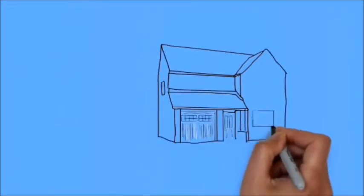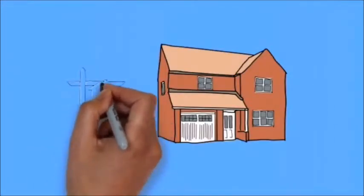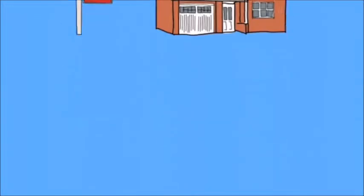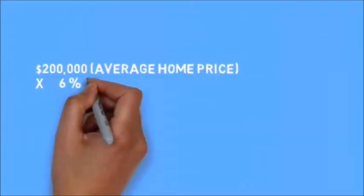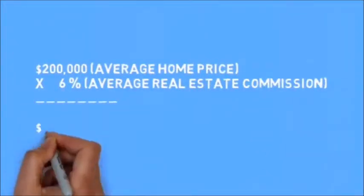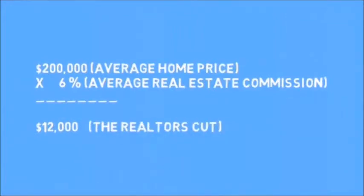When it comes time to sell your home and you choose to list with a realtor, you will have a real estate commission to pay. So let's look at the numbers: $200,000 average home price times 6% average real estate commission equals $12,000, the realtor's cut.